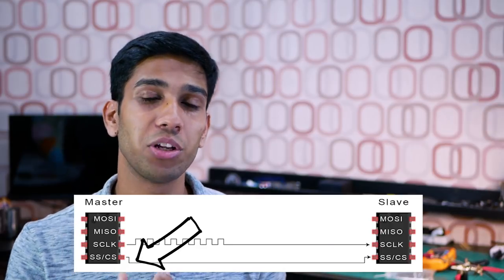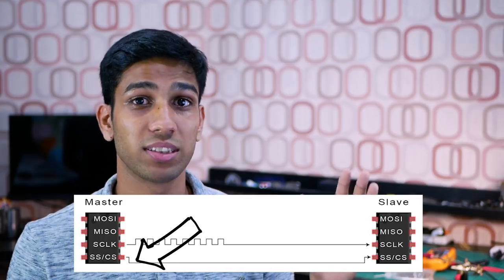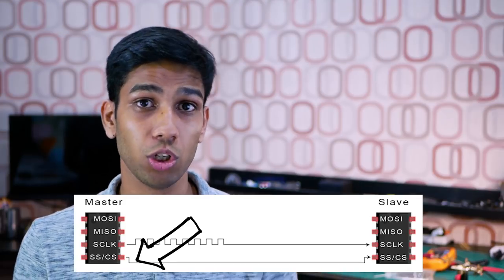Step number two: if you have multiple slave devices, the master will pick which slave device it wants to communicate to, and it'll enable communication with that slave device by pulling the slave select line down to a lower voltage.